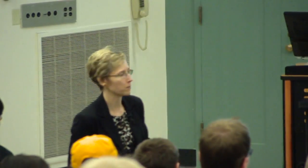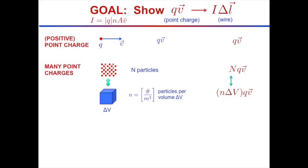If I'm given a chunk of material, I may not know the exact number of particles, but I know the number of electrons per unit volume — little n. Multiplying little n by the volume delta-V gives me the number of particles in that chunk.